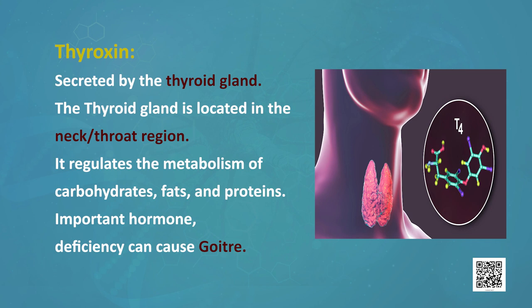First, thyroxine hormone is secreted by the thyroid gland, which is located in the neck or throat region. It regulates the metabolism of carbohydrates, fats, and proteins. Deficiency of this hormone can cause a disease known as goiter. You must have heard about iodized salt — iodine is a mineral which is an essential part of thyroxine, and its deficiency can cause goiter.